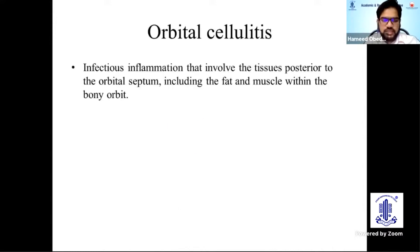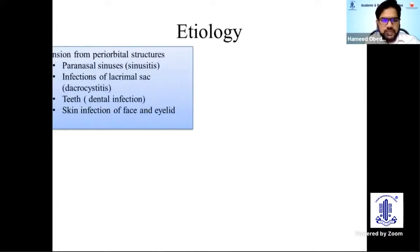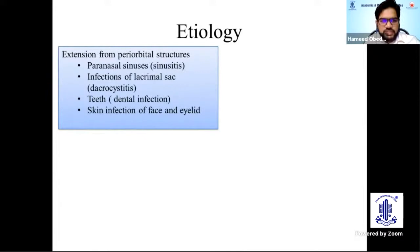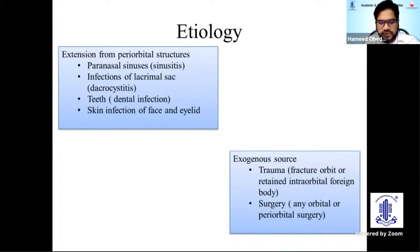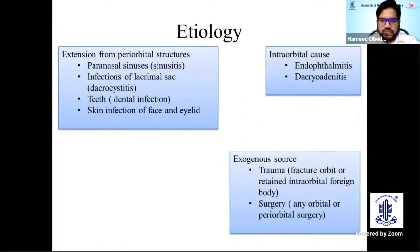Orbital cellulitis is the infectious inflammation involving tissues posterior to the orbital septum, including the fat and muscle within the bony orbit. It is more common in children, and bacterial orbital cellulitis is more common than fungal. Etiologically, it arises from extension from periorbital structures like paranasal sinuses, infection of the lacrimal sacs, teeth, skin of the face and eyelid, from exogenous sources like trauma and orbital surgery, and from within the orbit such as endophthalmitis and dacryocystitis.